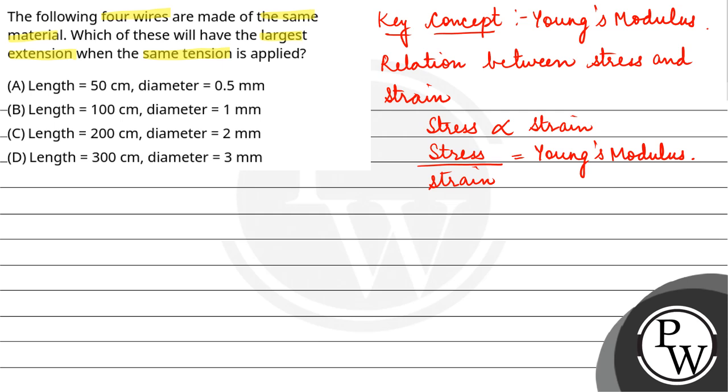So according to the question, aap ke paas jo stress hota hai, that is force per unit area, aur jo strain hai, that is delta L upon L. It is equal to Young's modulus. So yaha se aap ke paas delta L is equal to F L upon A Y.